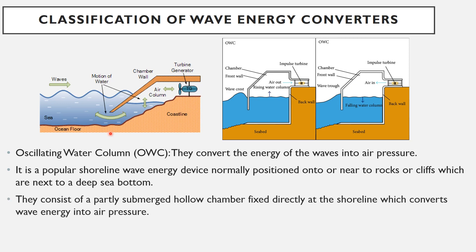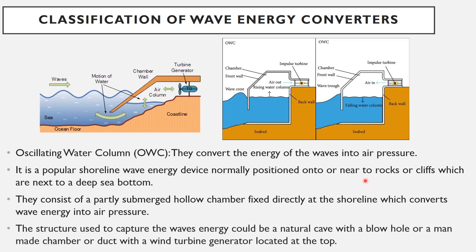The oscillating water column consists of a partly submerged hollow chamber directly at the shoreline that converts wave energy into air pressure. The structure capturing the wave energy could be a natural cave with a blowhole, or a man-made chamber or duct with a wind turbine generator located at the top.